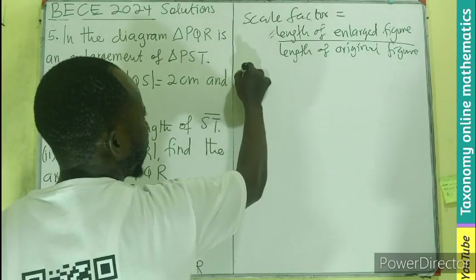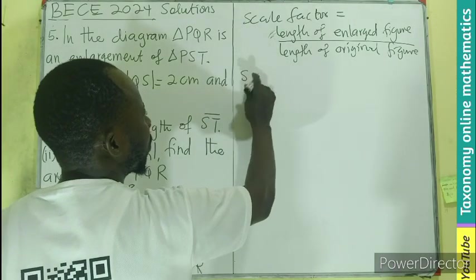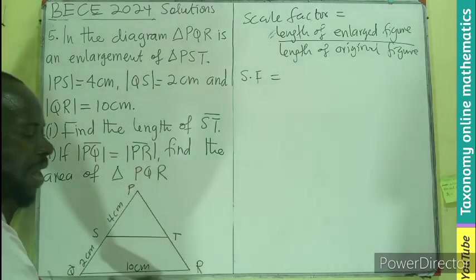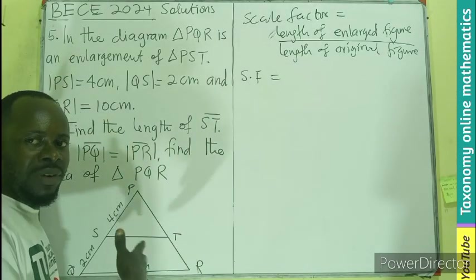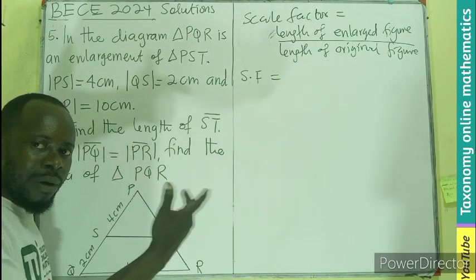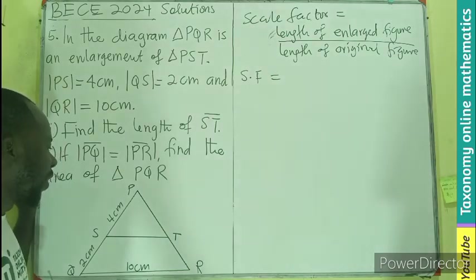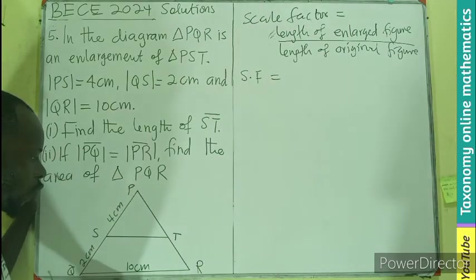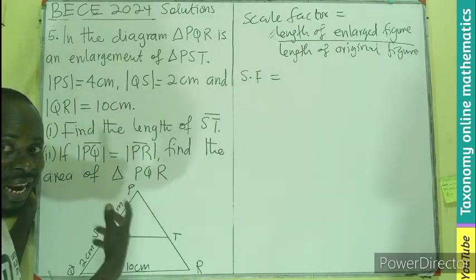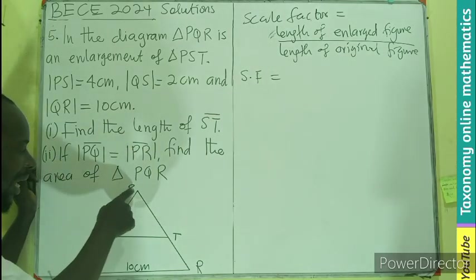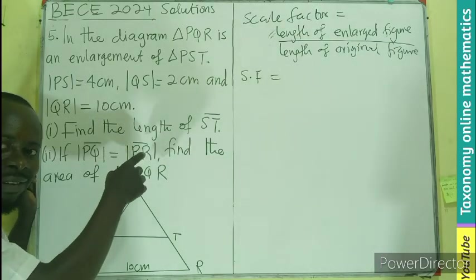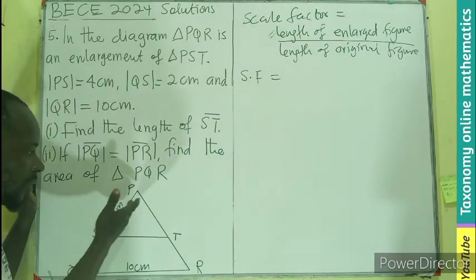Length of enlarged figure divided by length of the original figure. So in this case, our scale factor, let me use SF, will be equal to... We can compare any of the size of the enlarged figure to the corresponding size of the original. So when I take the triangle PQR, that's the bigger triangle, the enlarged figure.